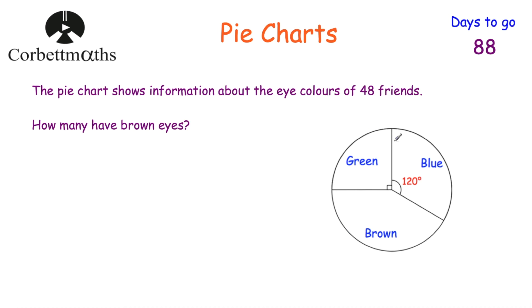Here's a hint: for green we know that's a quarter. For blue we have 120 degrees, and since 120 + 120 + 120 = 360, that means blue is a third of the circle. So a quarter of the friends have green eyes and a third have blue eyes — that might be enough of a hint to help you.